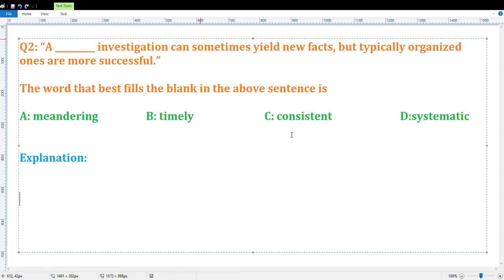By observing these four options, timely, consistent, and systematic are similar to organized, except meandering. So option A is correct.